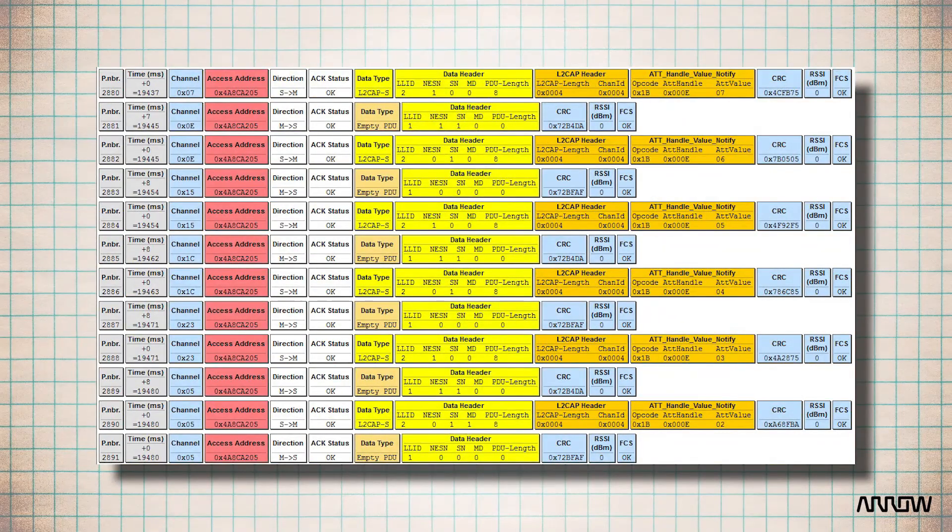During a connection event, the slave sends data, then the master, then the slave, and so on. In our example, we can see the slave sends data with an LLID equal to two (binary 10), starting a higher layer packet. The master answers with an LLID equal to one, sending an empty packet.